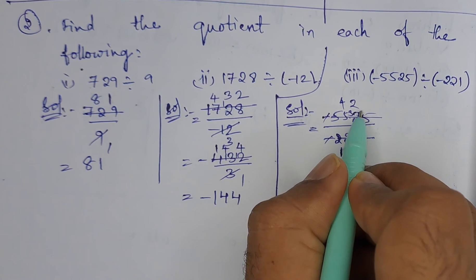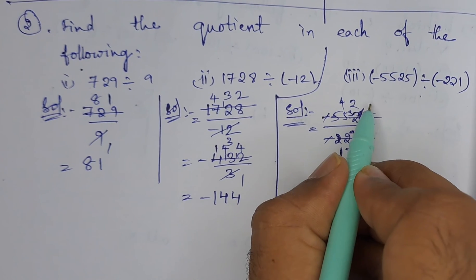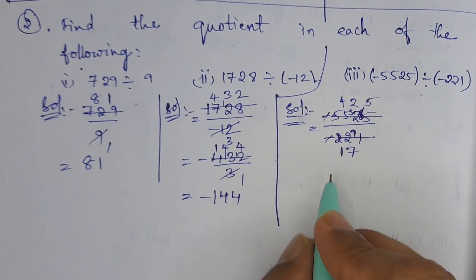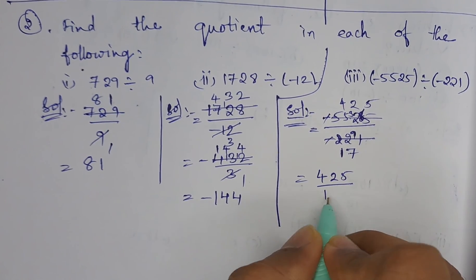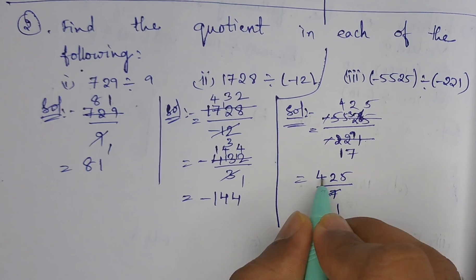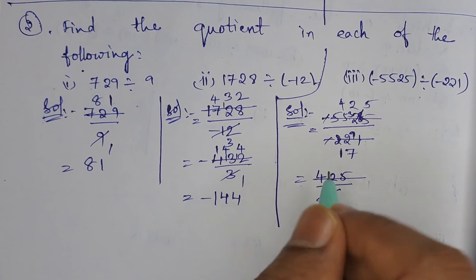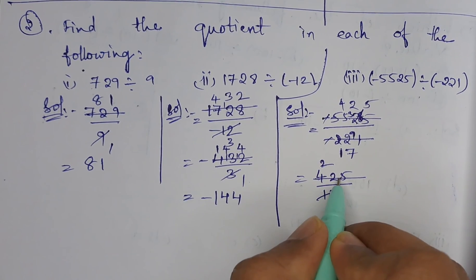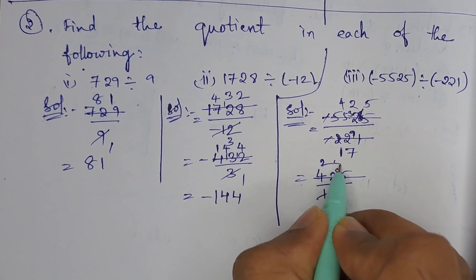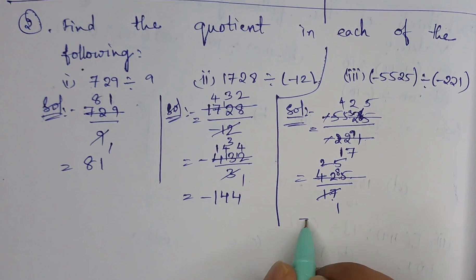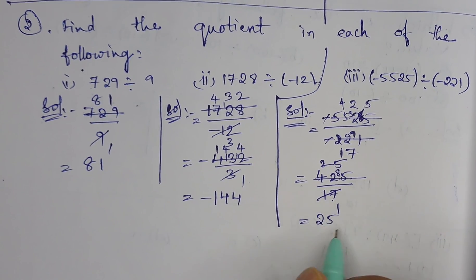So 6 left, 13 fives are 65. So 425 divided by 17: 17 ones are 17, 2 times 17 are 34. Now 8 left, 17 fives are 85. So the answer is 25.